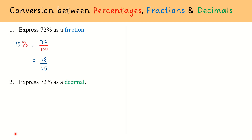What if we need to convert 72% to a decimal? So 72%, because it is equal to 72 over 100, by dividing a number by 100, we can move the decimal place to the left — in this case two times — so that gives us 0.72. However, if you're not confident doing that, you could always rely on your calculator to convert 72 over 100 to a decimal.